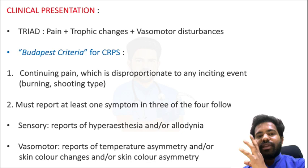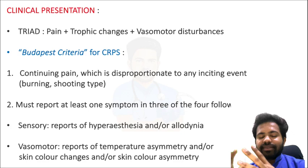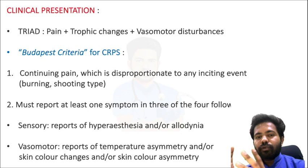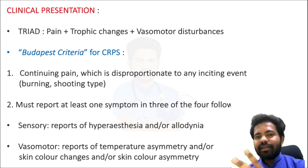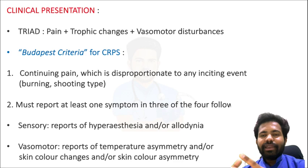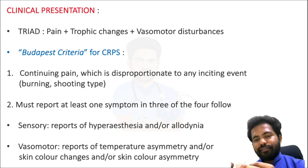This burning and shooting type of pain is always disproportionate to the injury. The second Budapest criterion is that the patient must report at least one symptom in three of the four following categories. For sensory: they must report hyperesthesia or allodynia. Allodynia is where you feel pain from stimuli that normally don't cause pain — for example, when sleeping and the bedsheet touches your feet, you feel pain.